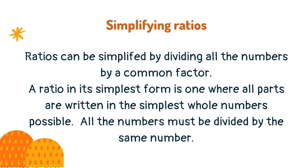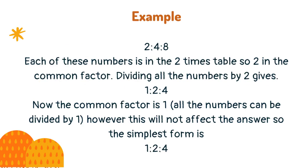Ratios can be simplified by dividing all the numbers by a common factor. A ratio in its simplest form is one where all parts are written in the simplest whole numbers possible. All the numbers must be divided by the same number. For example, 2 to 4 to 8 — each of these numbers is in the 2 times table, so 2 is the common factor. Dividing all the numbers by 2 gives 1 to 2 to 4.